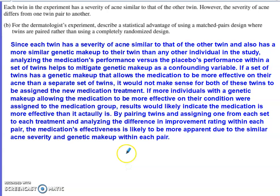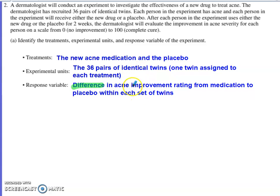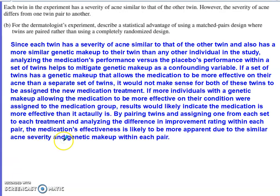Part B notes that each twin has acne severity similar to that of their co-twin, but severity differs from one twin pair to another. The question asks for the statistical advantage of using a matched pairs design — where twins are paired — rather than a completely randomized design. Since each twin has similar acne severity and similar genetic makeup to their co-twin, pairing them and analyzing the difference in acne improvement rating should yield better, clearer results.